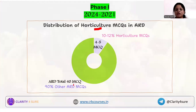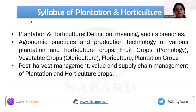In ARD, there are around 40 MCQs in total, and out of those 40, you can expect around four to five MCQs from the horticulture part. This is about the number of questions.